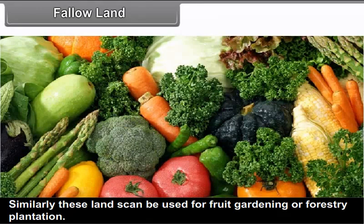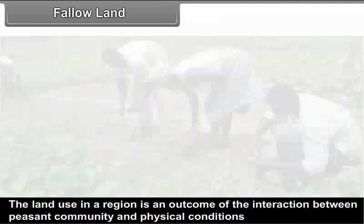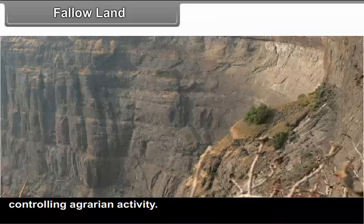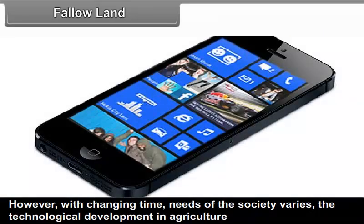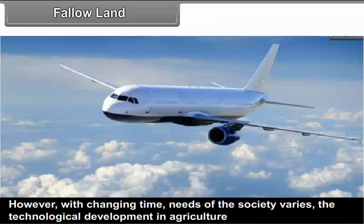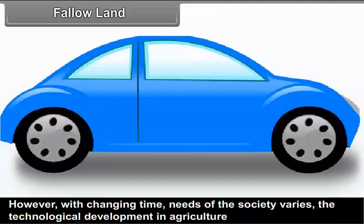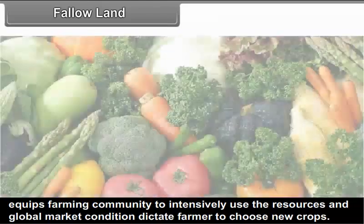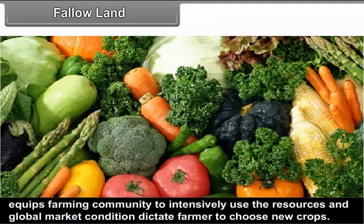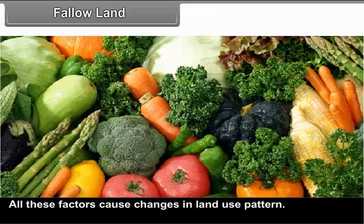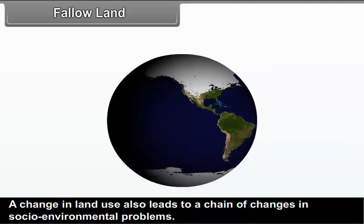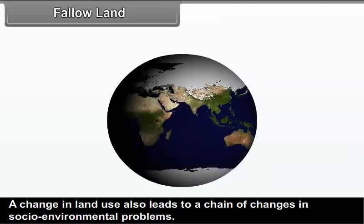Current fallow lands can also be used for fruit gardening or forestry plantation. Land use in a region is an outcome of the interaction between the peasant community and physical conditions. With changing time, needs of society vary, technological development equips farming communities to intensively use resources, and global market conditions dictate farmers to choose new crops. All these factors cause changes in land use patterns, which also leads to a chain of changes in socio-environmental problems.